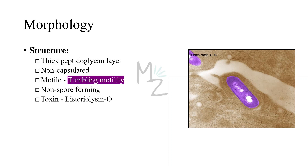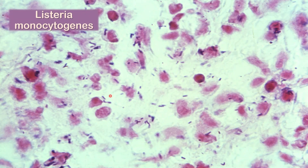Structure: being gram-positive, it will have a thick peptidoglycan layer. It is not capsulated, but this organism exhibits an unusual tumbling movement that distinguishes it from Corynebacterium diphtheriae, which is non-motile. It is non-spore-forming but does produce a toxin — Listeriolysin O. This is how it looks under the microscope: rod-shaped, with V-shaped formations, an arrangement similar to Corynebacterium diphtheriae.